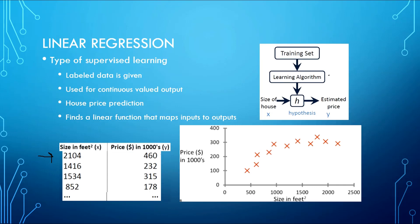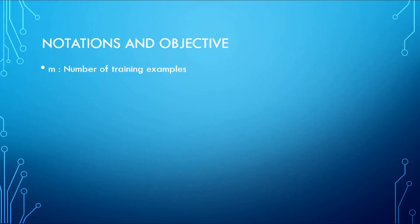Let us move forward and see some of the notations used in Linear Regression. The first notation is M, which corresponds to the number of training examples in our training dataset. X's are the input features — X might be the size of the house or the number of bedrooms.